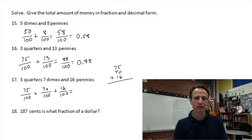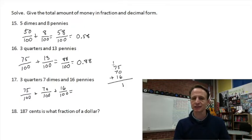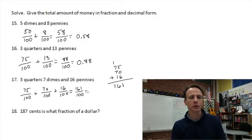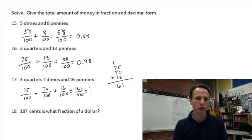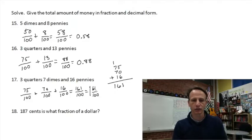Adding: 5 + 0 + 6 = 11, drop the one and regroup. 7 + 7 = 14, 15, 16 — that gives us 161 cents = 161/100. As a mixed number, we take out 100/100, which is one whole, leaving 61 hundredths. As a mixed number: 1 and 61/100. Written as a decimal: 1.61.